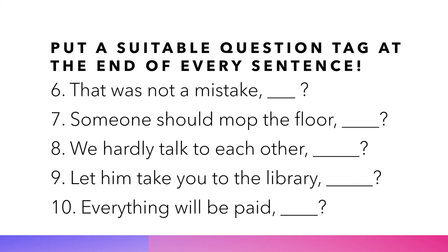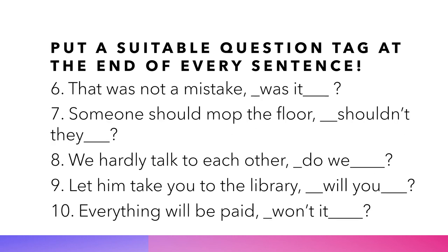Continue to numbers 6 through 10: 6. That was not a mistake. 7. Someone should mop the floor. 8. We hardly talk to each other. 9. Let him take you to the library. 10. Everything will be paid. Let's check the answers: 6. That was not a mistake, was it? 7. Someone should mop the floor, shouldn't they? 8. We hardly talk to each other, do we? 9. Let him take you to the library, will you? 10. Everything will be paid, won't it?